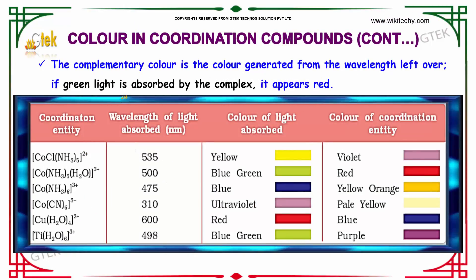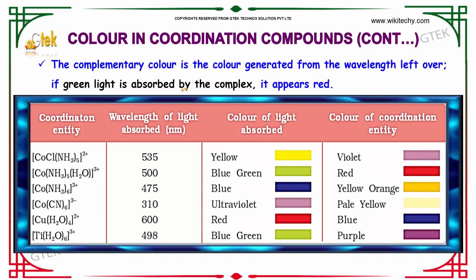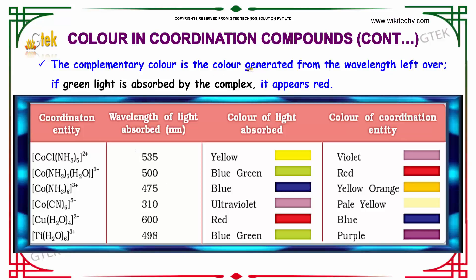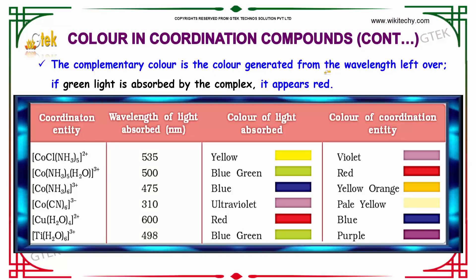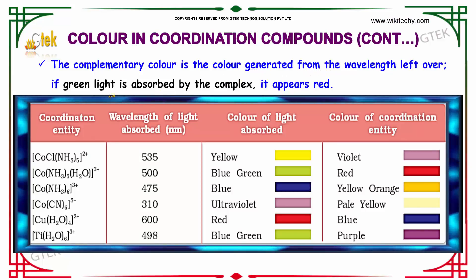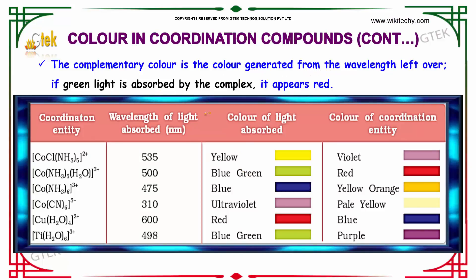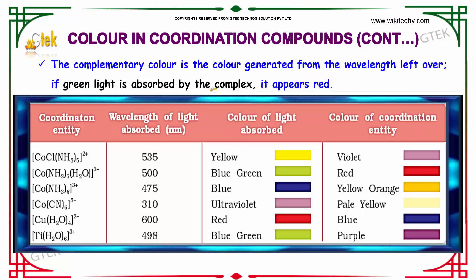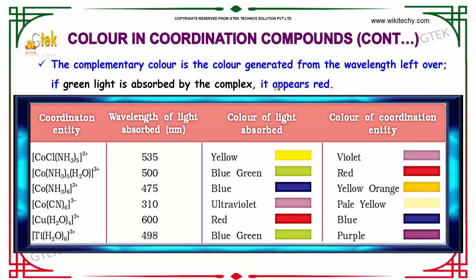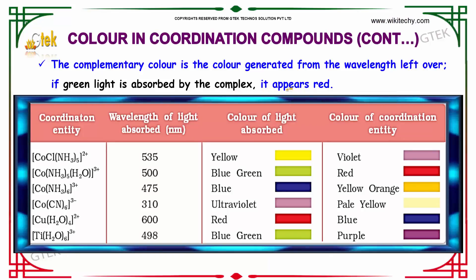The complementary color is the color generated from the wavelength left over. If green light is absorbed by the complex, it obviously appears red.